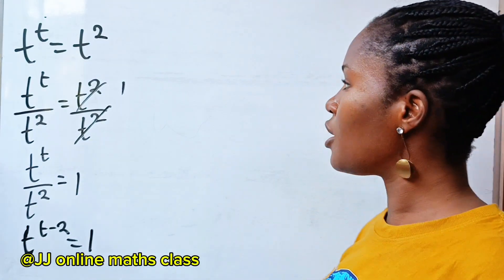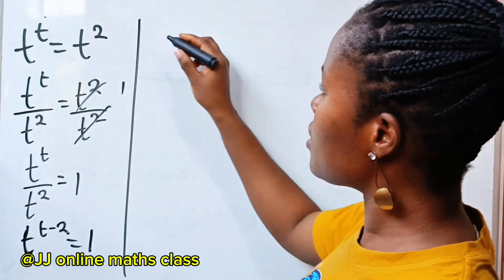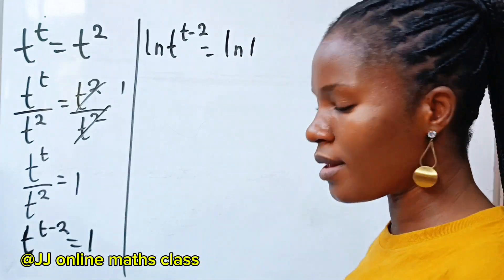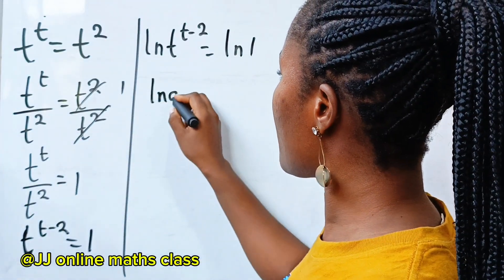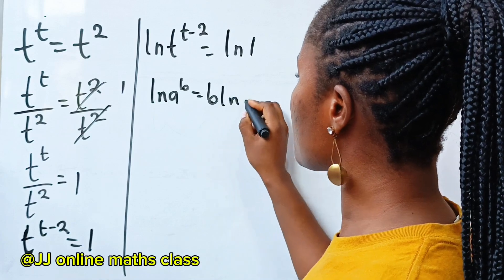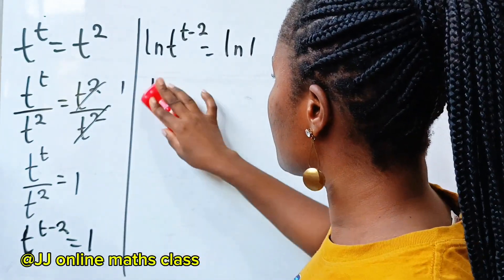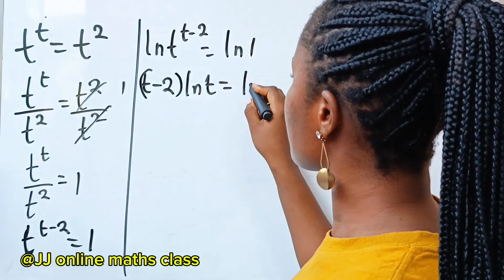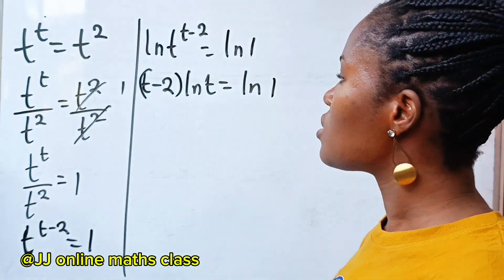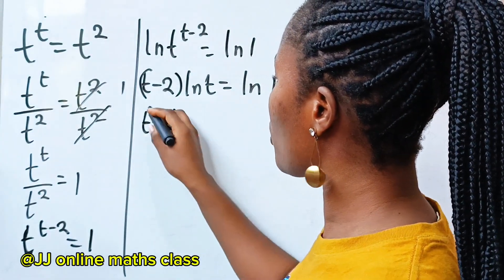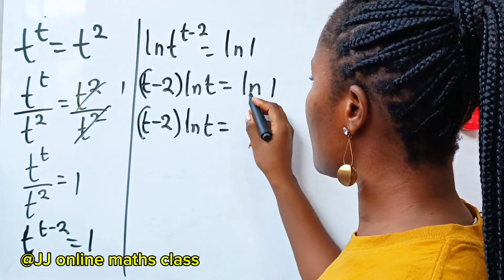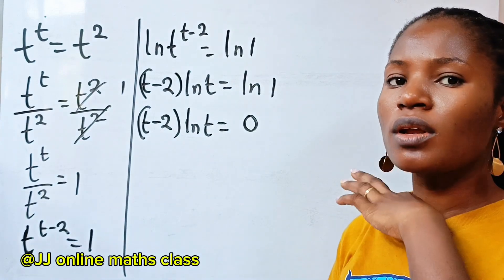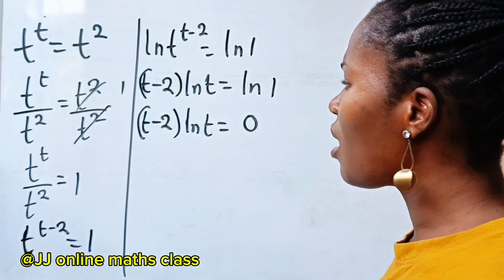Now this is a proper time to introduce natural log to both sides. So we have ln of t to the power of t minus 2 is equal to ln 1. Using the rule that ln of a to the power of b equals b multiplied by ln a, we get t minus 2 multiplied by ln t is equal to 0. Remember that ln 1 is equal to 0.